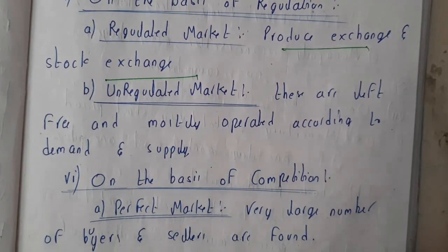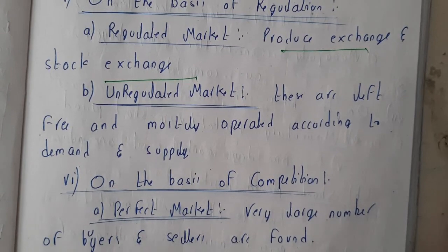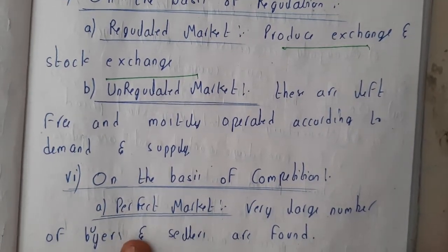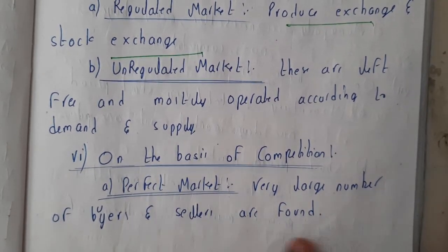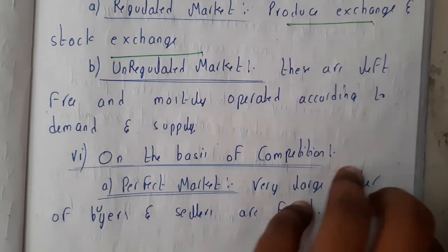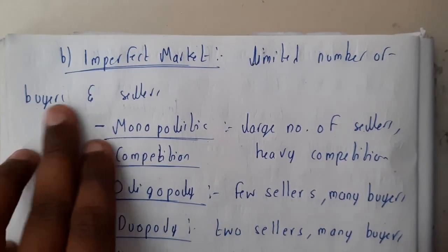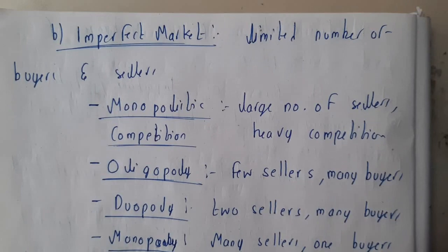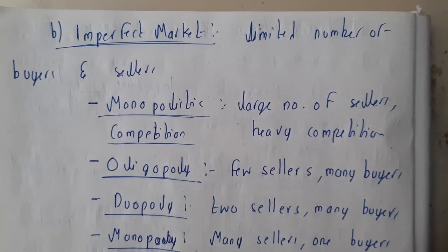Now let us go through competition — this is a really important topic which we'll be discussing in our future lectures, covering two to three lectures. Perfect market is nothing but where a very large number of buyers and sellers are found. The second type is imperfect market, where a limited number of buyers and sellers are found. These are divided into many types; the first type is monopolistic, where there are a large number of sellers.